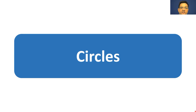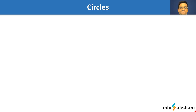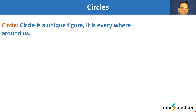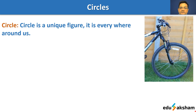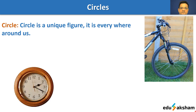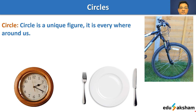Now we will learn about circles — how to find the perimeter and area of a circle. A circle is a unique figure; it is almost present everywhere around us. You see the tire of your bicycle, that is in the form of a circle. If you see a wall clock, that is in the form of a circle. If you see a plate in which you eat, that is also in the form of a circle.